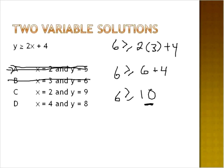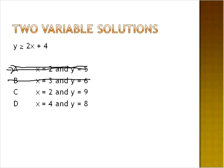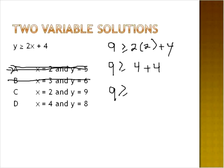Moving on to option C: X is equal to two, Y is equal to nine. Nine is greater than or equal to two times two plus four. Nine is greater than or equal to four plus four. Nine is greater than or equal to eight — yes, nine is greater than eight, so that one is true. With one correct solution, we can stop at that point.